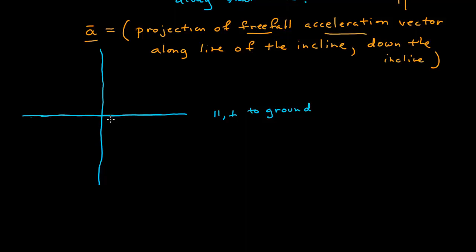This first coordinate system is parallel and perpendicular to the ground. This is useful because I know that my freefall acceleration is equal to negative g in the vertical direction. The magnitude of the freefall acceleration is g, pointing downward. That's why I want this coordinate system.